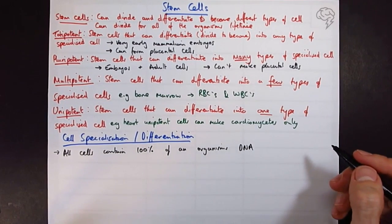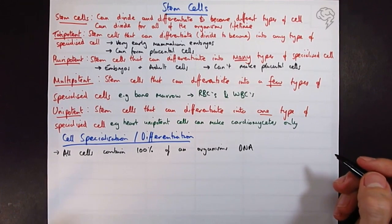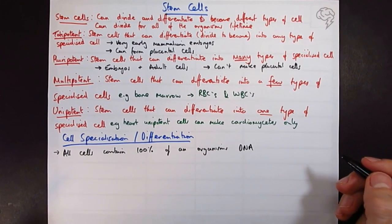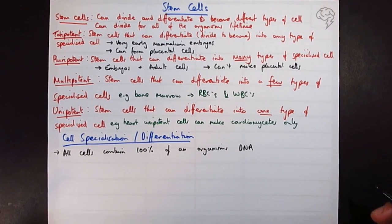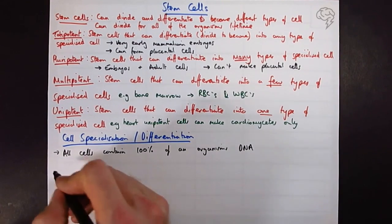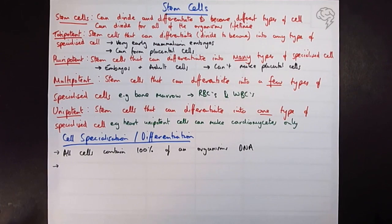So your skin cells have the DNA in them that would make eye cells or liver cells or heart cells, but those genes are just not being expressed. Only totipotent cells can express all of those genes.